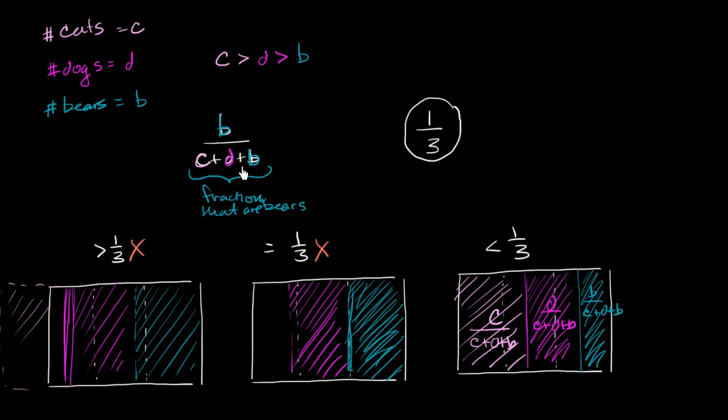Now I will make an algebraic argument, or I could call it an analytic argument. And to make this argument, I'm going to leave this expression. We know this is the fraction that are bears. And I'm going to write this 1 third in a form that looks a lot like this. And then based on the information we have, we can directly compare them.